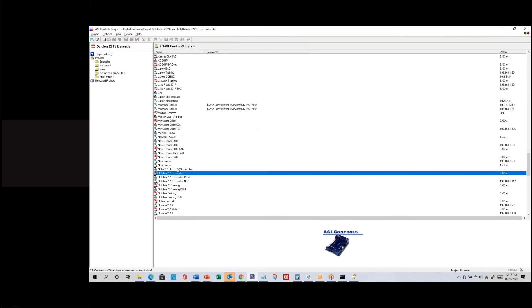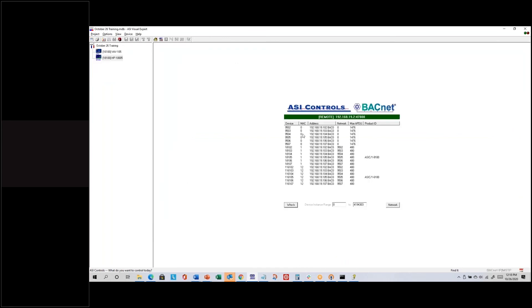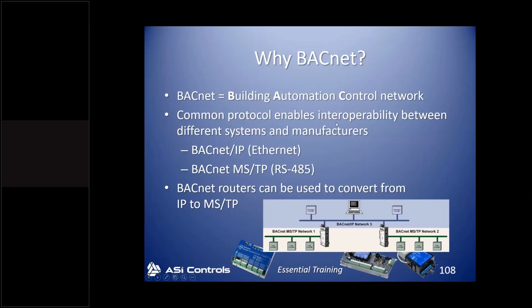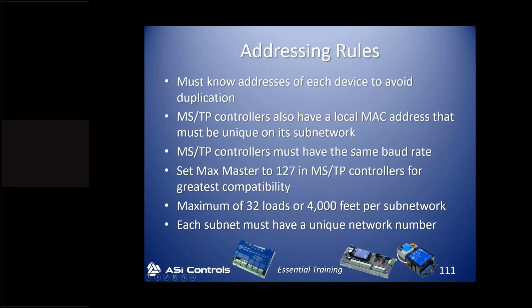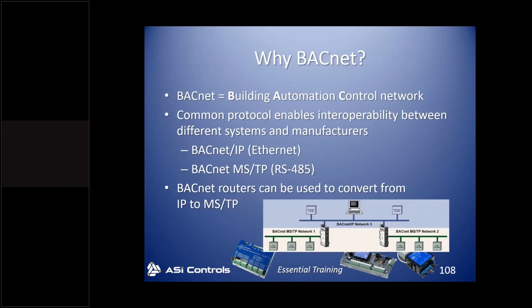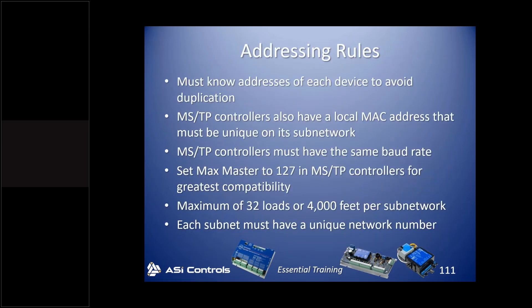Likewise, all VAV controllers can share the same MAC address because they're on different MSTP networks. Every controller on the same MSTP network needs the same baud rate — for example, MSTP Network 1 might all run at 38.4K while Network 2 runs at 76.8K; that's fine since they're different networks. There's also a Max Master setting usually left at 127. For absolute optimum communication, you'd want MAC addresses sequential starting from zero, with Max Master set to the highest MAC address on the network — but in the real world, defaulting to 127 is common to make adding controllers easier.